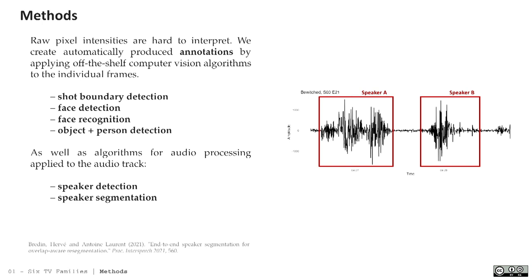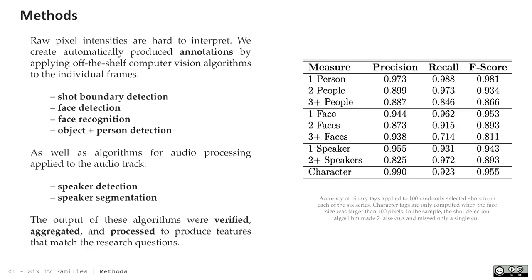One comment we've always gotten on our visual work is: 'That's great that they're on screen together, but what if they're not talking to each other? Or what if their talking is separate? How does that relationship occur?' This work on verifying that our ways of measuring worked is checking to confirm our process.